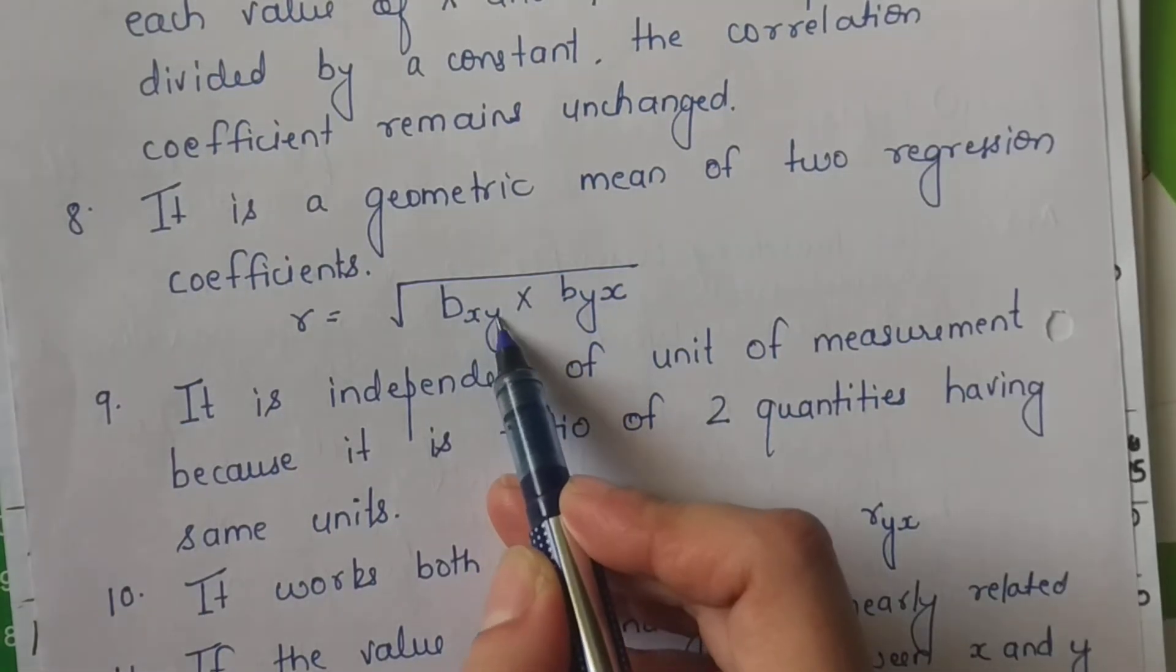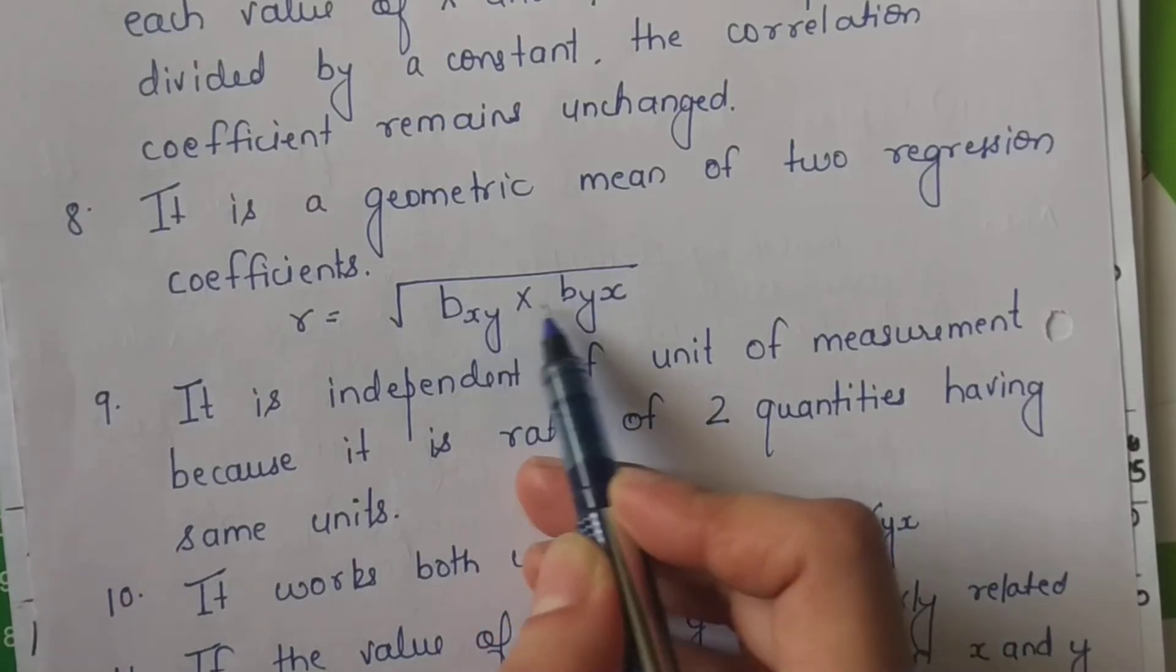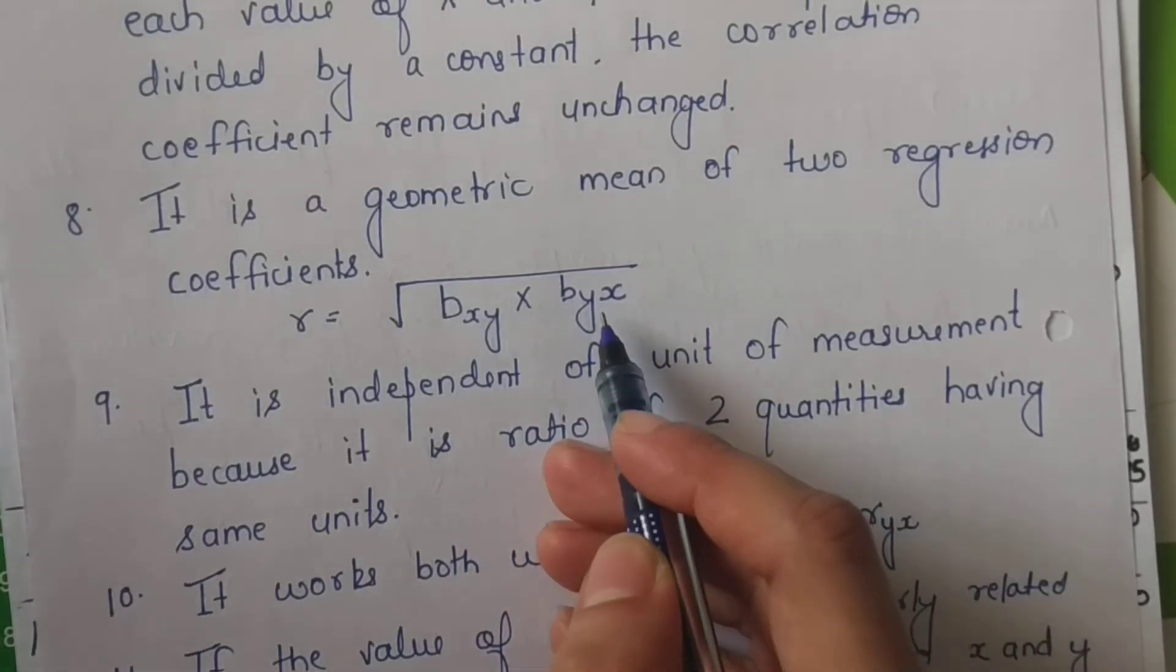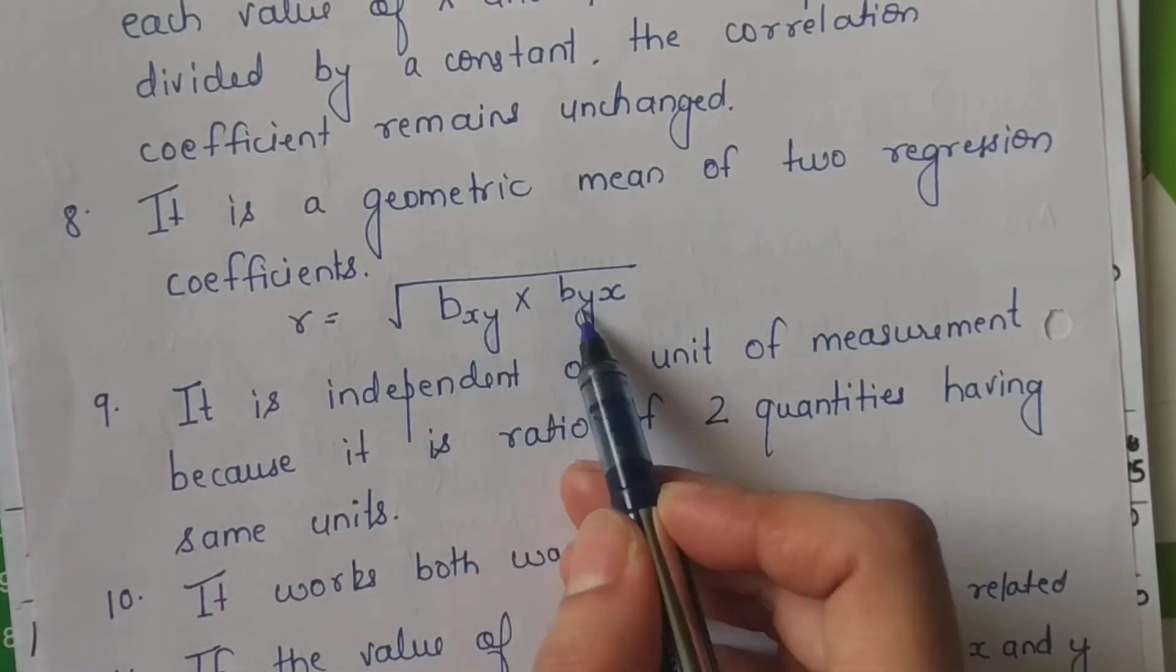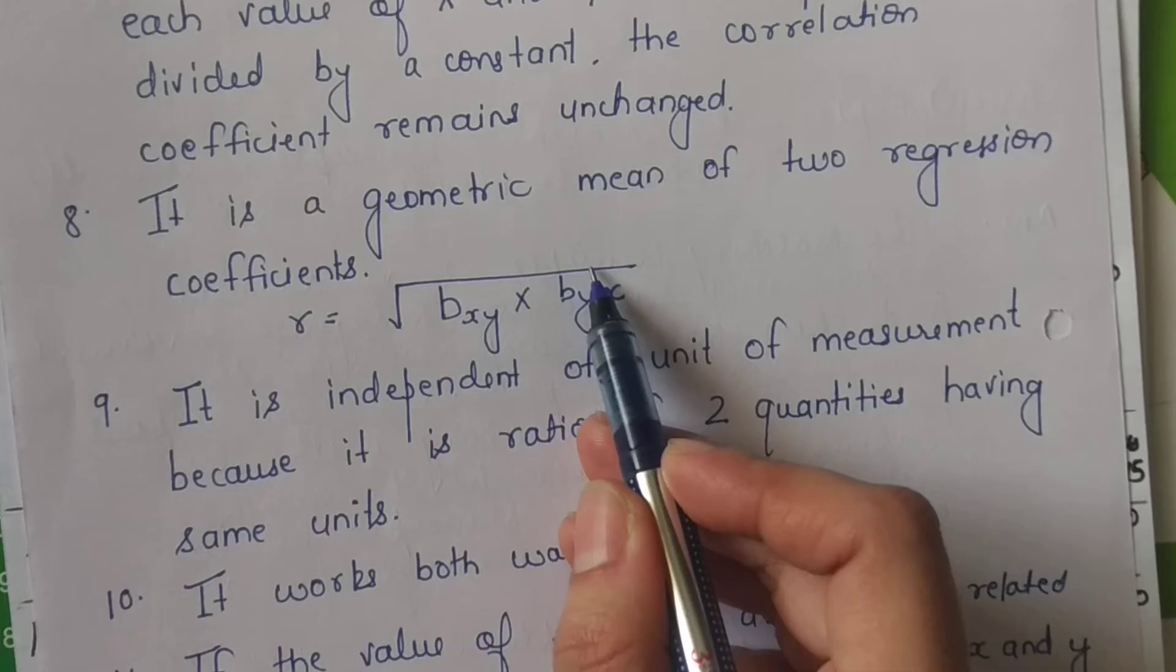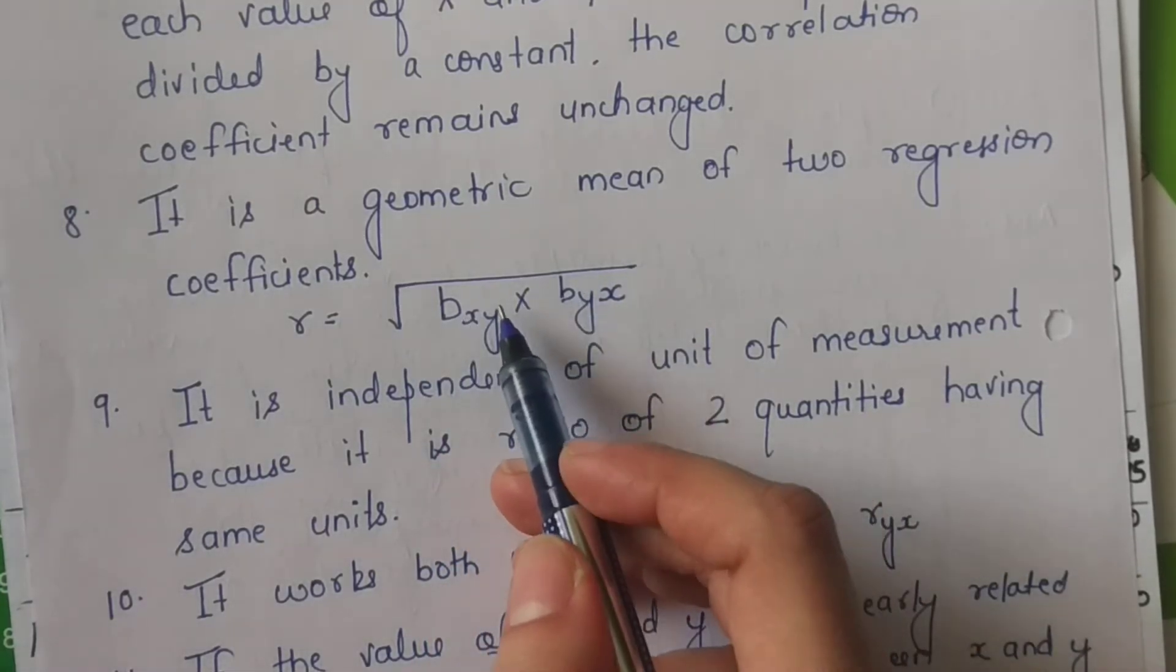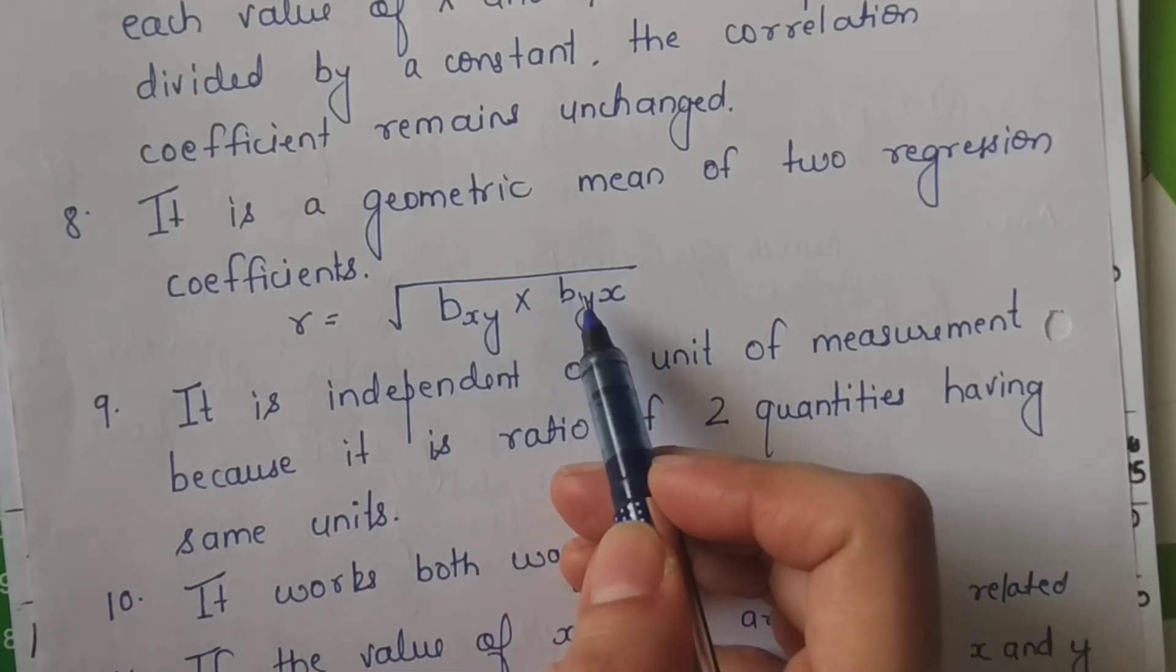Toh regression jo hota hai, this is regression of x on y and this is regression of y on x variable. Toh agar hum in dono ko multiply karke unka square root kar rahe hain, basically hum inka geometric mean nikal rahe hain. Kyunki do items ka geometric mean yehi hota hai: un dono ke multiplication ka square root. So basically agar hum dono ke regression ka multiply karke uska square root kar deti hain, basically hum dono ka geometric mean nikal rahe.